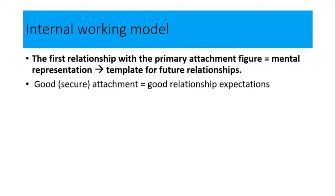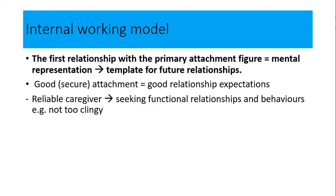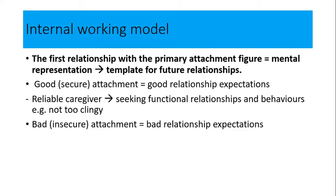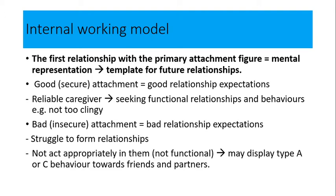So if you have a secure attachment at first, then you would be expected to have good relationships in the future with fairly positive patterns of behaviour on the whole. Whereas if you have an insecure attachment to start with, that could lead to relationship behaviours being less positive — for example, there might be issues such as jealousy, insecurity, aggressive patterns of behaviour and so on. You might struggle to form relationships or act inappropriately. That's the idea of the internal working model.